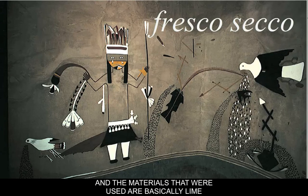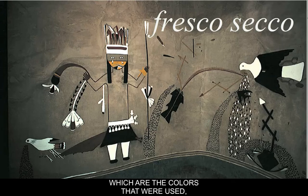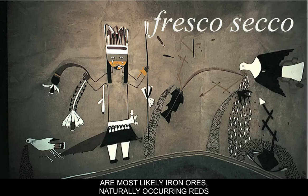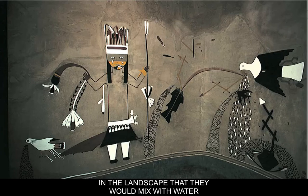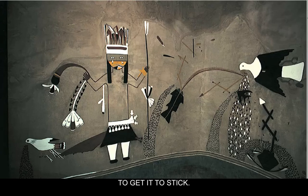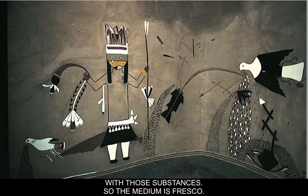The pigments — the colors that were used — are most likely iron ores, naturally occurring reds in soils, and possibly some berries or pollens: naturally occurring substances in the landscape that they would mix with water and then apply to the wall, using various substances to get it to stick. In this instance, it's probably water mixed with those substances. So the medium is fresco.